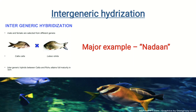Next is intergeneric hybridization, which involves crossing between two different genera. When writing a cross, we first write the female. For example, Nadan is an intergeneric hybridization — it is a cross between Labeo rohita female and Catla catla male. This was the question many of you attempted wrong, but it is directly from the Handbook of Fisheries. The answer for Nadan is: Labeo rohita female × Catla catla male.